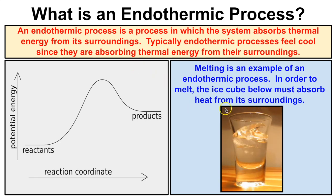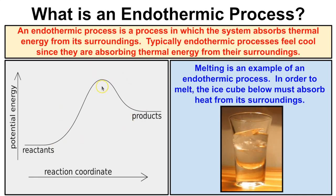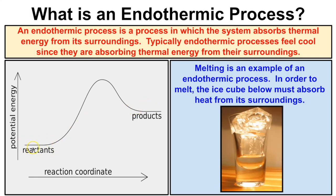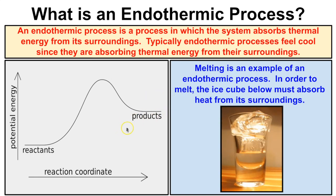Melting is an example of an endothermic process — in order for ice cubes to melt, they must absorb thermal energy or heat from their surroundings. If we were to graph what an endothermic process looks like, the reactants are at a low energy state and the products have high potential energy, so the reactants must absorb thermal energy from their surroundings in order to reach that higher energy state on the product side.